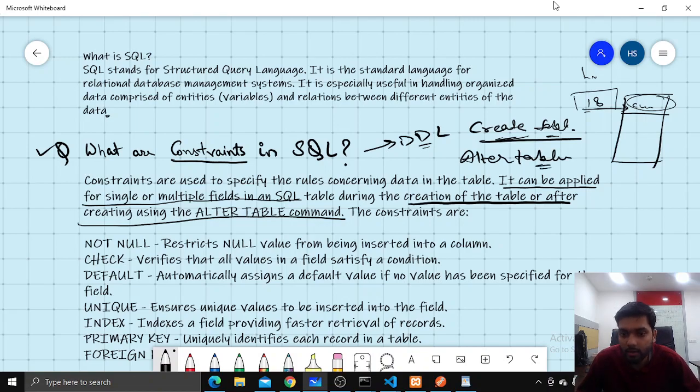Now let's see types of constraints: NOT NULL constraint, CHECK constraint, DEFAULT constraint, UNIQUE constraint, INDEX constraint, PRIMARY KEY, and FOREIGN KEY.